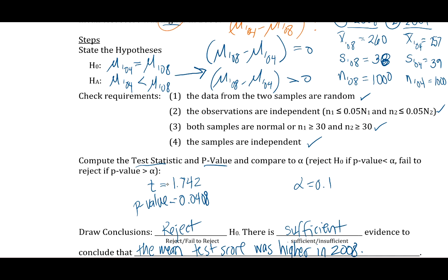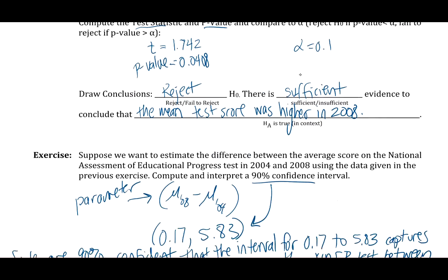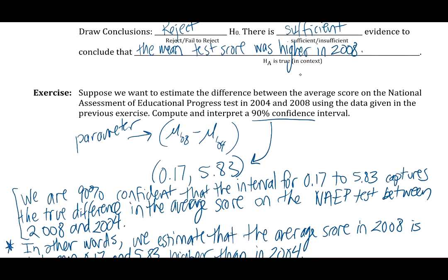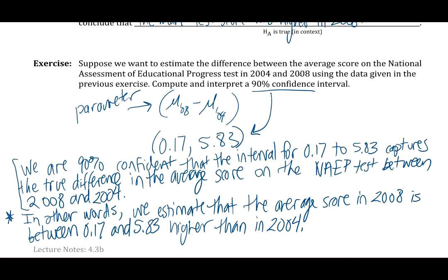Just briefly, we're going to have a sign change on our test statistic. That would be negative. Our alternate hypothesis would be less than 0. And our confidence interval is going to have different signs and be flipped around. It's going to go from negative 5.83 to negative 0.17. So the only thing that changes in that, none of that is incorrect. What changes is how you interpret it.